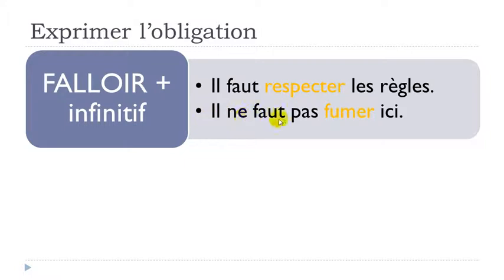And then another option. So I've been putting here and here the two parts of the negative form. Il ne faut pas fumer, to smoke, ici, here. Il ne faut pas fumer ici.